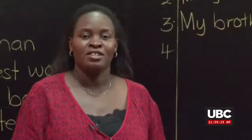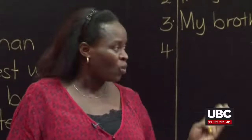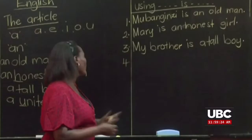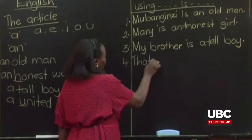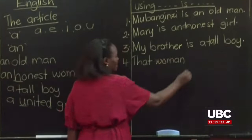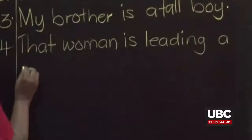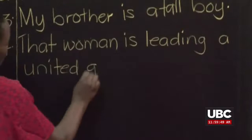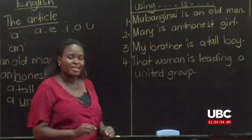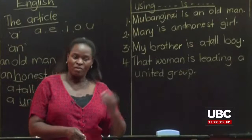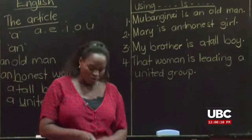For our fourth sentence, we have the word 'united', which begins with a vowel letter but sounds like a consonant. We say maybe she's a leader, so: 'She is leading a united group.' We expect that in a group there are many people, but when they are together we call it a group — that's why we put the article 'a' and treat it as singular. So let's read through our sentences.